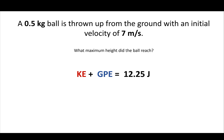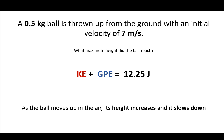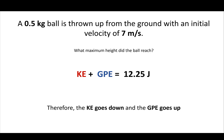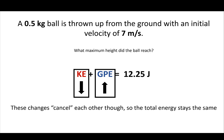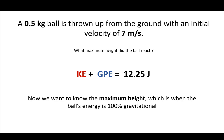The total energy never changes over time — not just at the beginning, always. As the ball moves up, its height increases but it slows down, so kinetic energy goes down and gravitational potential energy goes up. These changes cancel each other out, so the total energy remains the same throughout all points of the trip. To find the maximum height, note that at the maximum height all of the ball's energy is gravitational — none of it is kinetic. So we set kinetic energy to zero, which will tell us the maximum height.